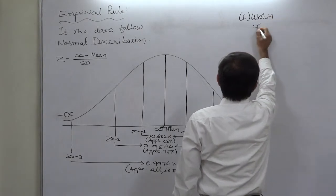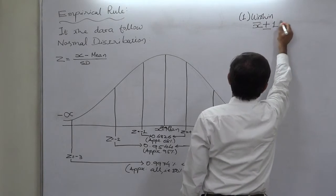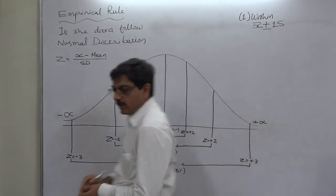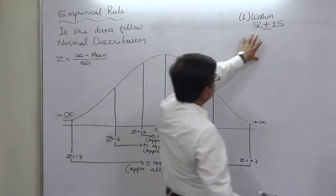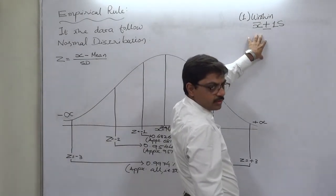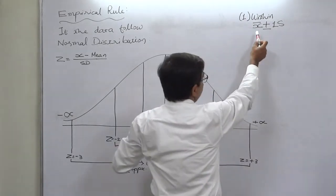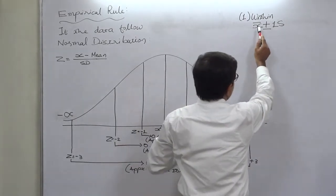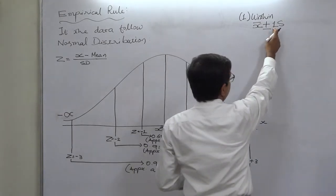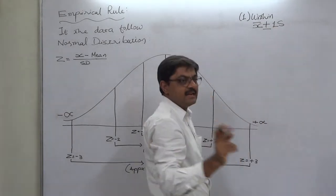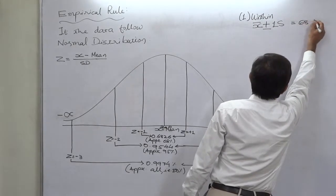So the first rule of the empirical rule is: within x̄ ± 1 standard deviation, there are approximately 68% of the data values. This is because the difference between a data value and the mean is always Z times the standard deviation, where Z equals ±1.